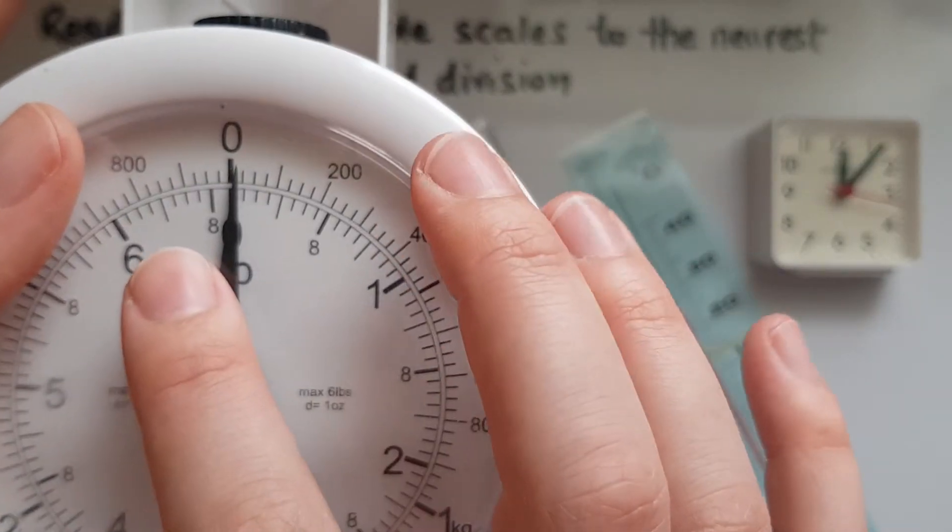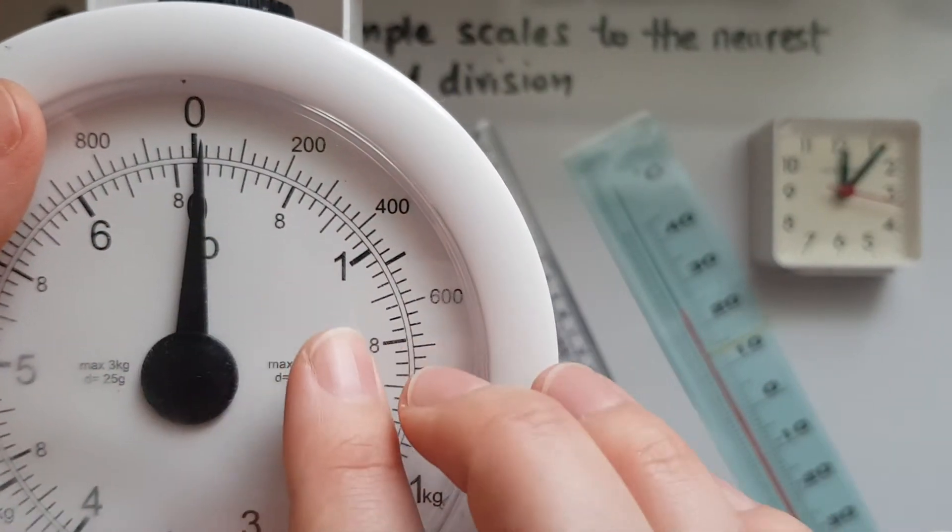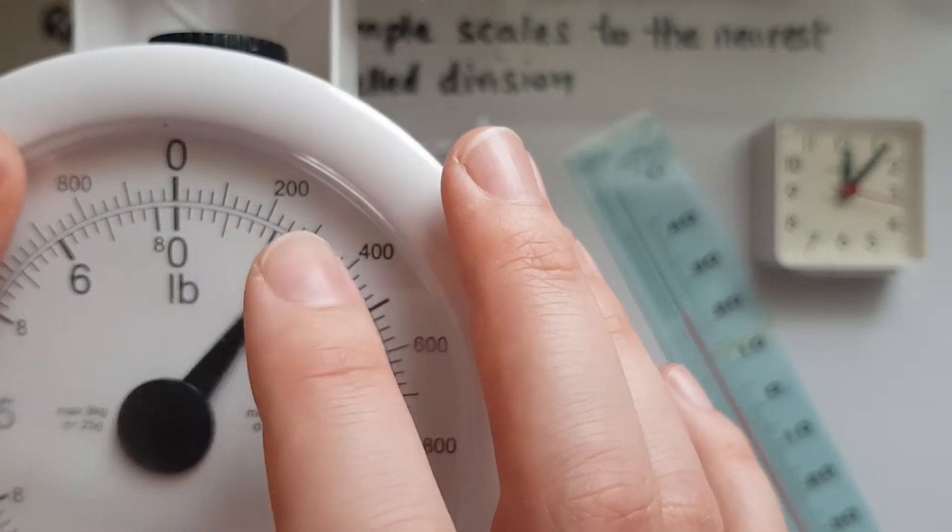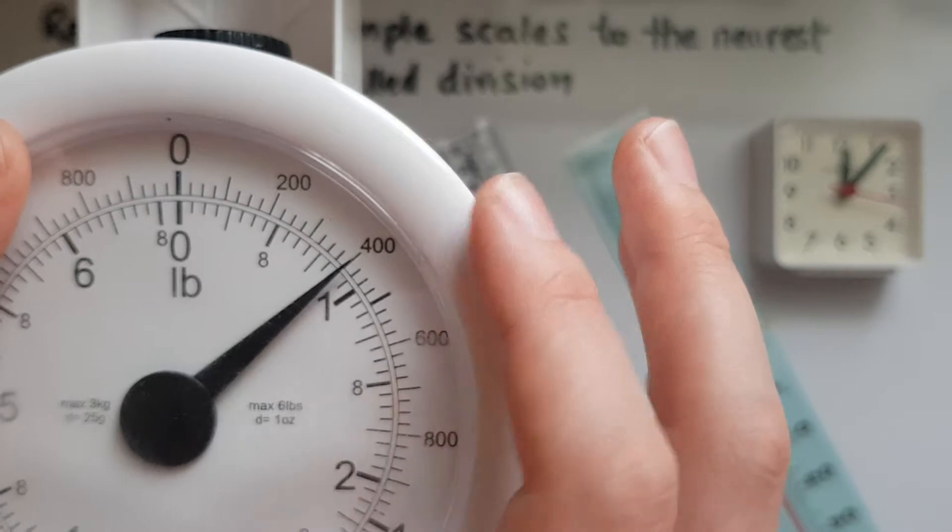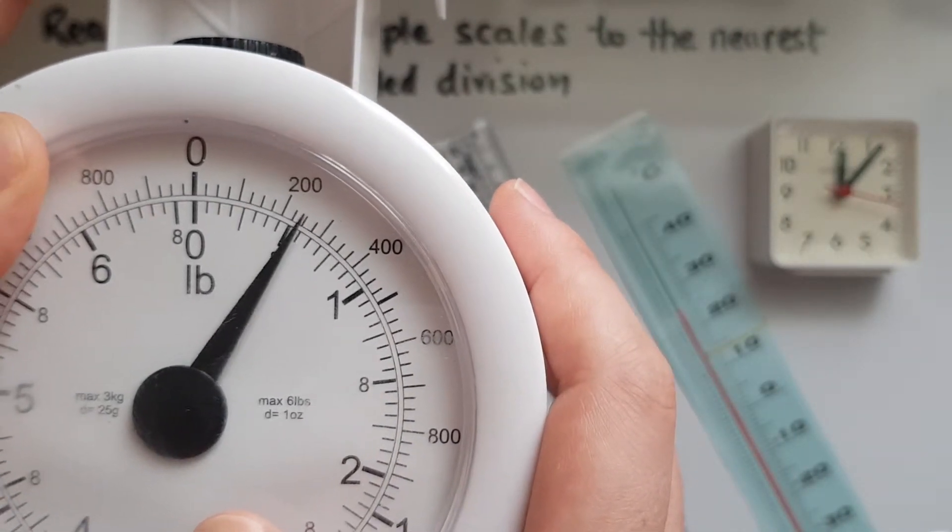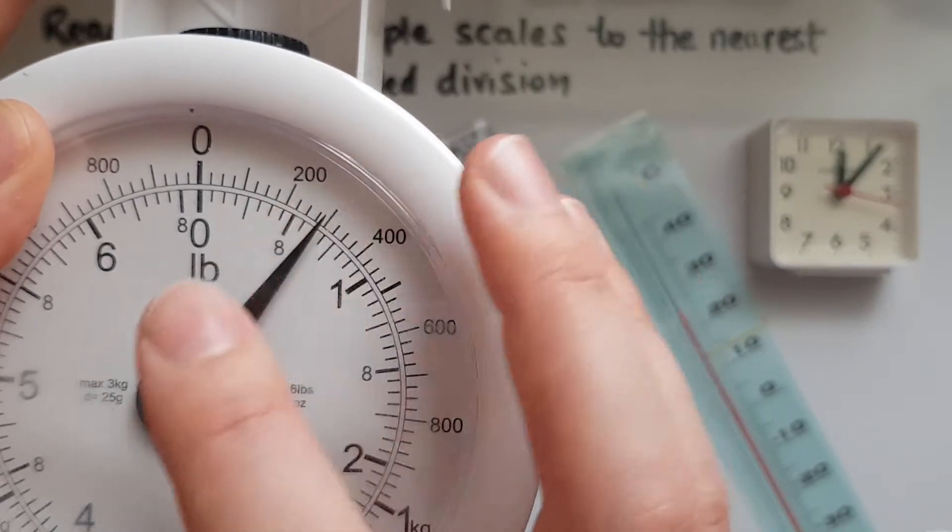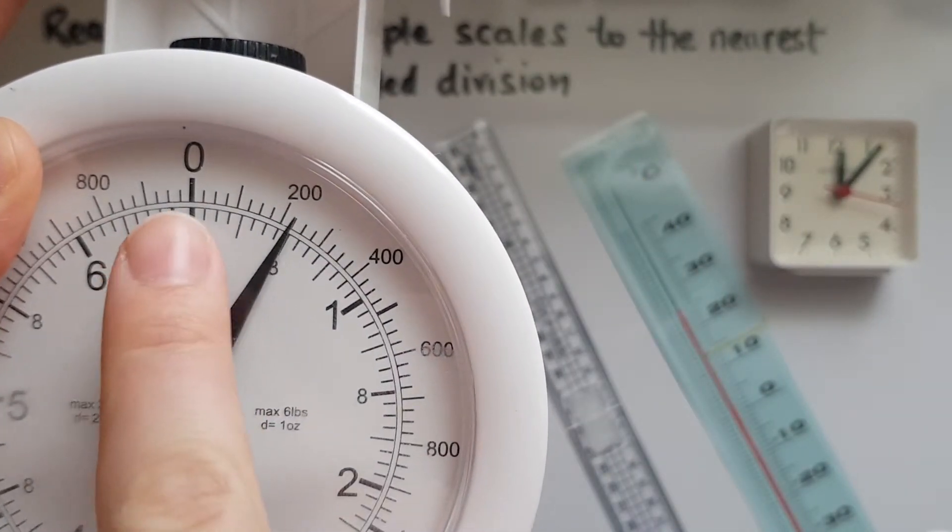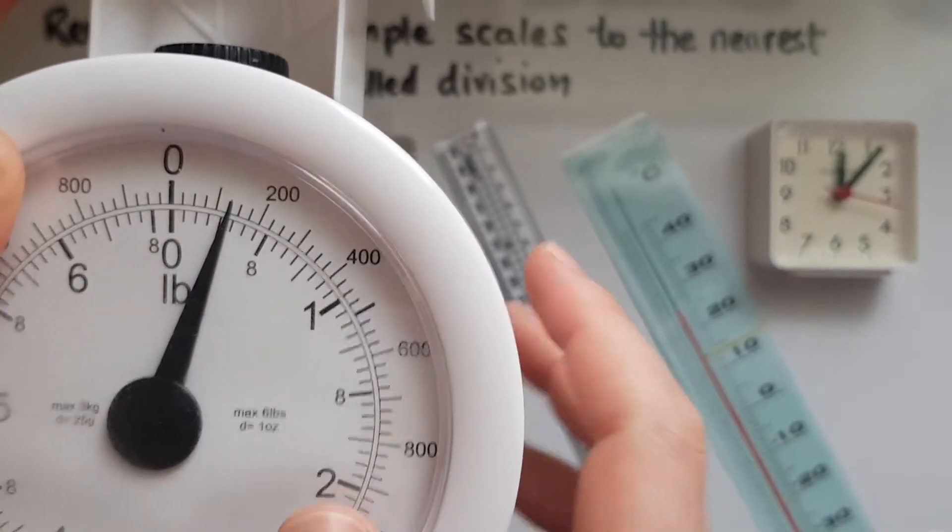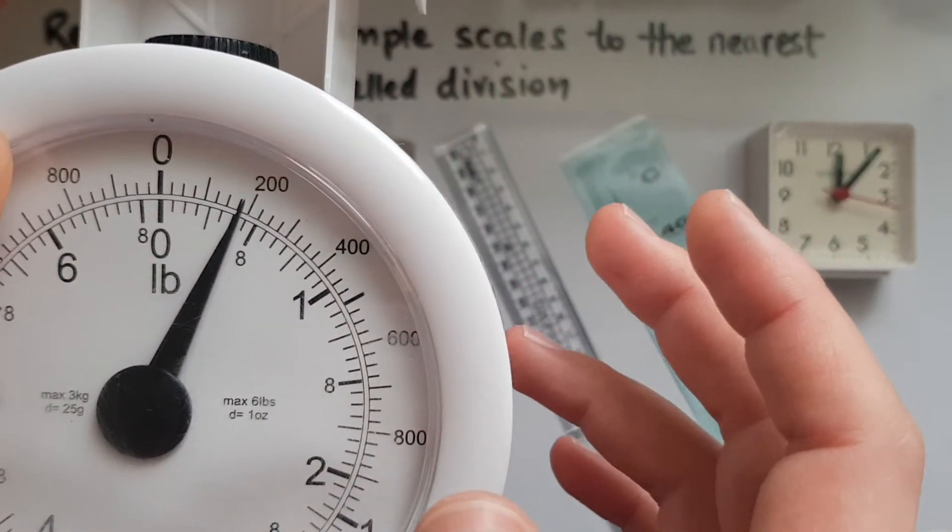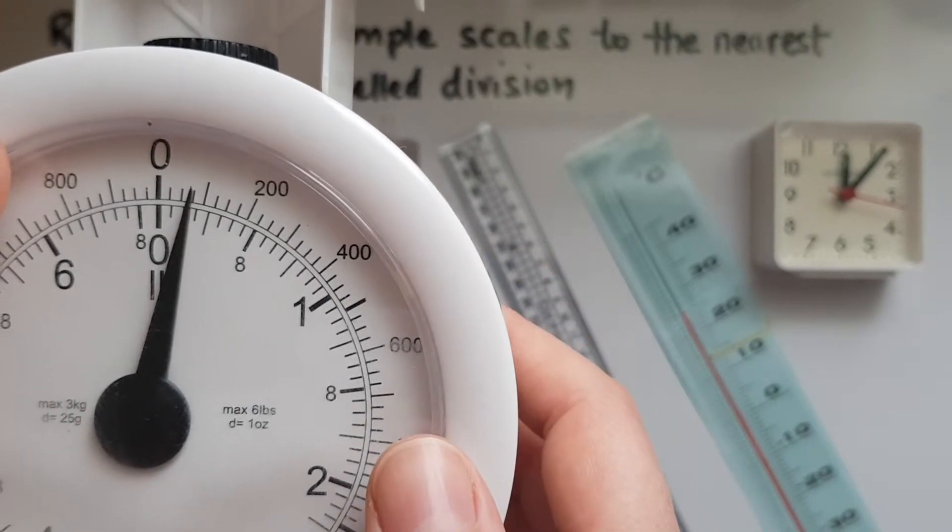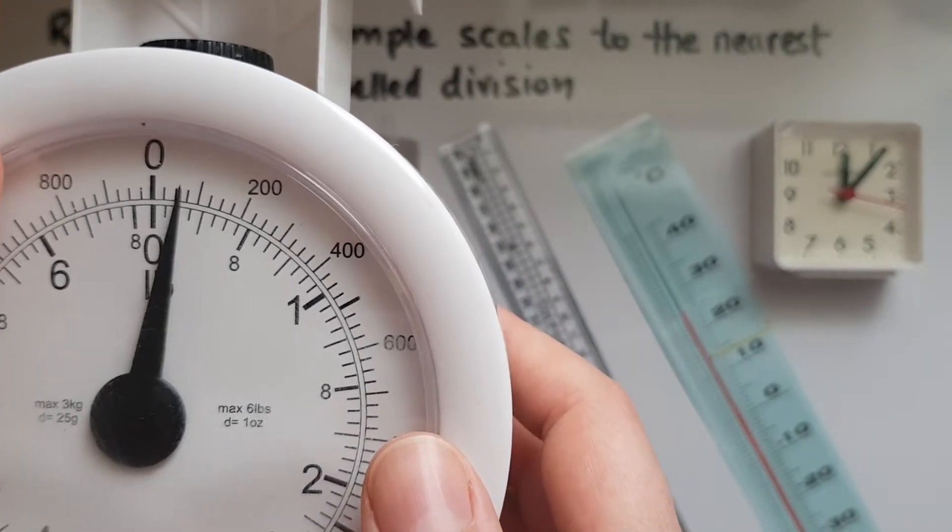In terms of ounces, because we looked at the grams on the outside, ounces are on the inside. So we've got 0 to 8 ounces. Now as you can see, there are eight small divisions between them. So that would be 1, 2, 3, 4, 5, 6, 7, 8. So this doesn't need much working out because you can go right.